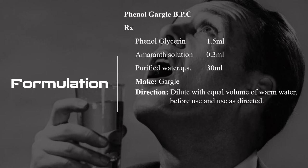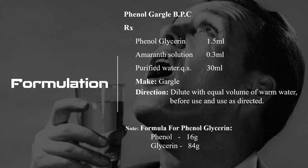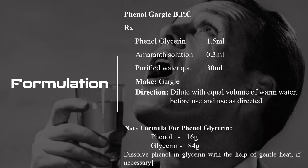In this RX, phenol glycerin as such is not available, so you need to prepare phenol glycerin first. The formula for phenol glycerin: phenol 16 grams, glycerin 84 grams. Dissolve phenol in glycerin with the help of gentle heat if necessary. If mixing is not proper, you can also apply heat.